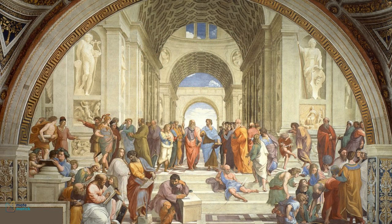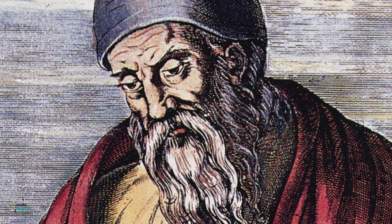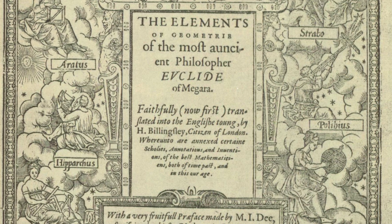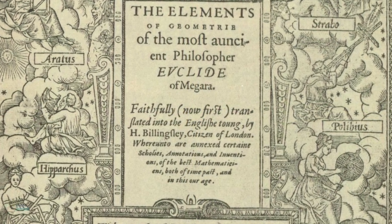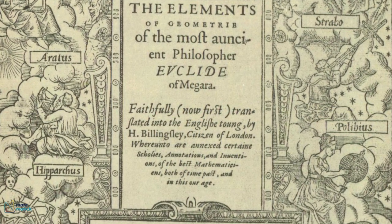The concept of perfect numbers dates back to ancient Greece. The famous mathematician Euclid was one of the first to study them. In his work, Elements, Euclid described a formula for generating even perfect numbers.